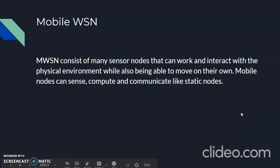The fifth and last type is Mobile WSN. These networks consist of a collection of sensor nodes that can move on their own and interact with the physical environment. The mobile wireless sensor network is much more versatile than the static sensor network. Advantages of MWSN over static wireless sensor networks include better and improved coverage, better energy efficiency, higher channel capacity, and so on.